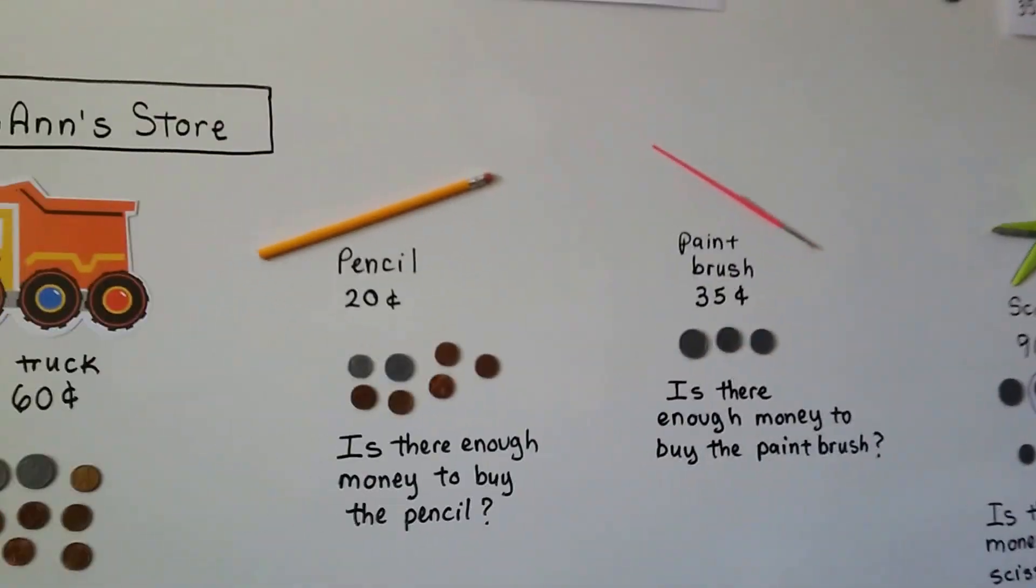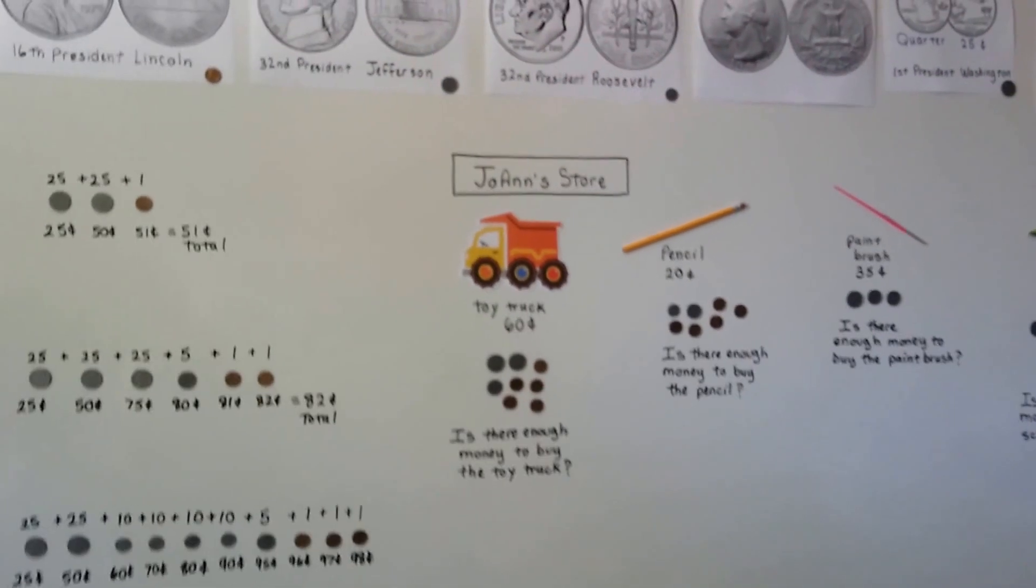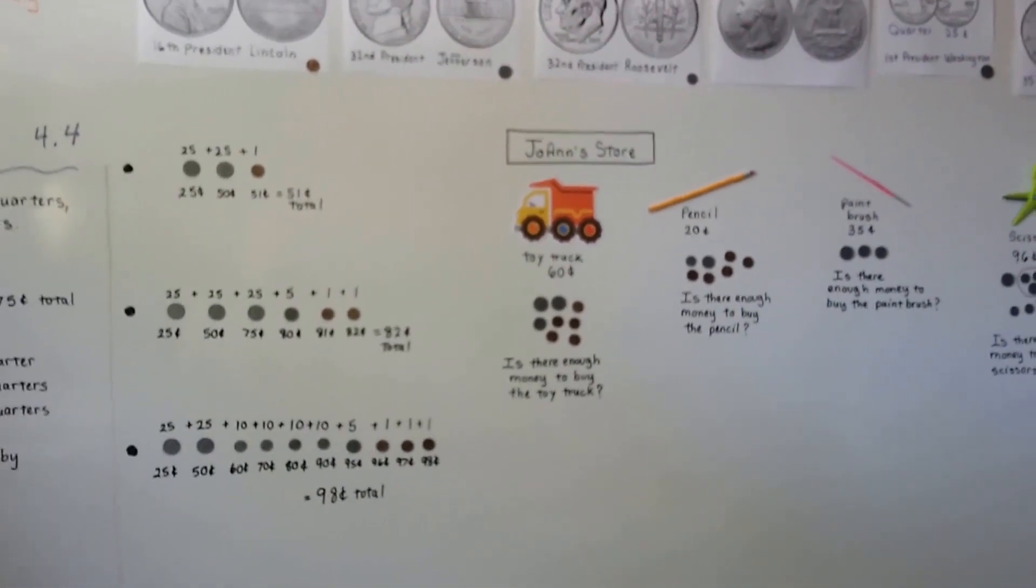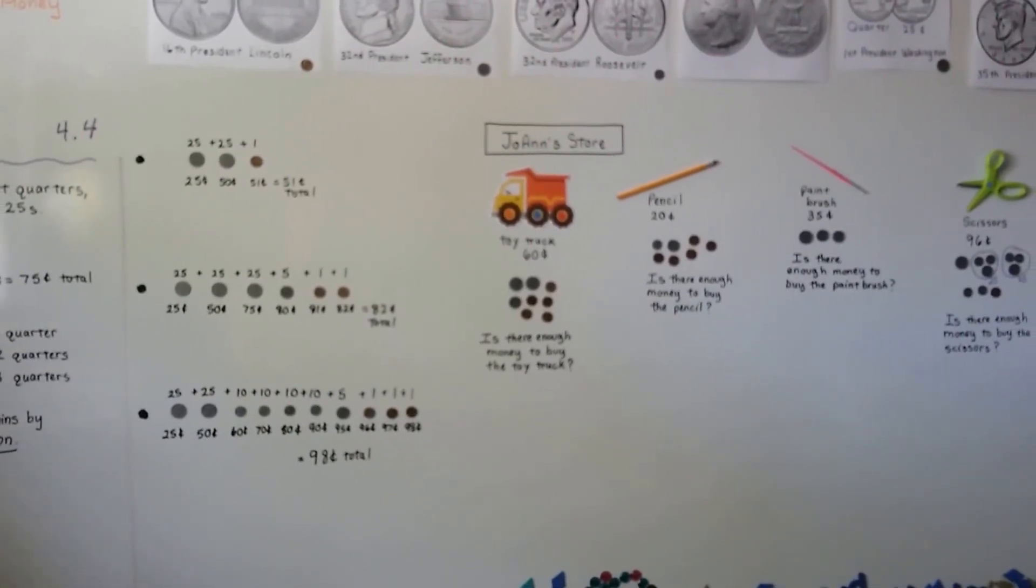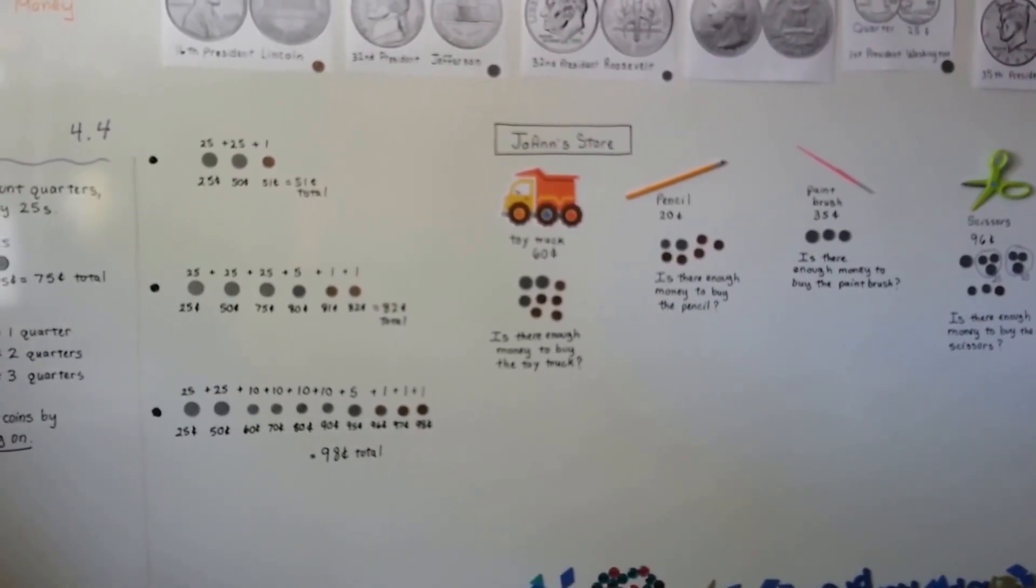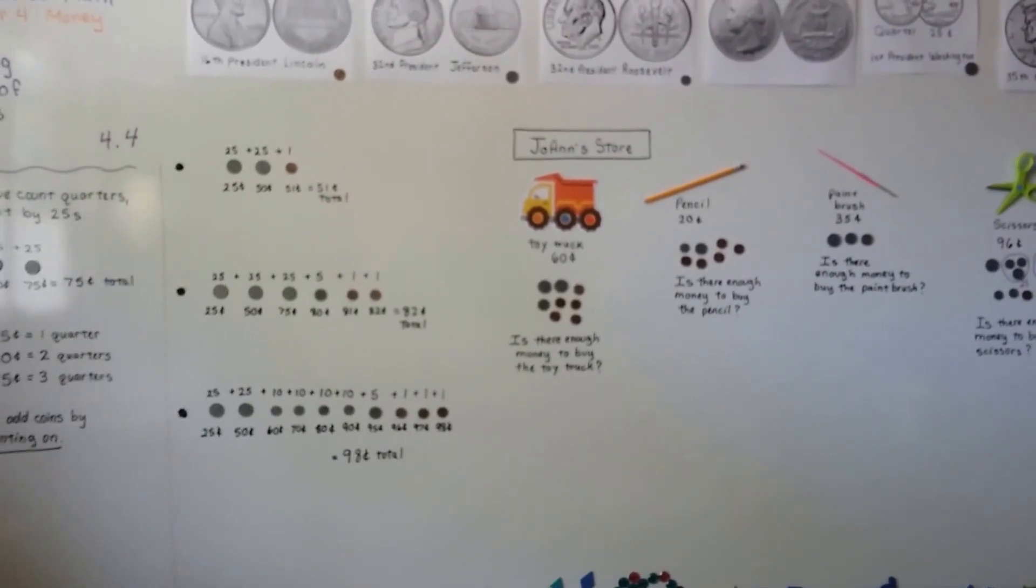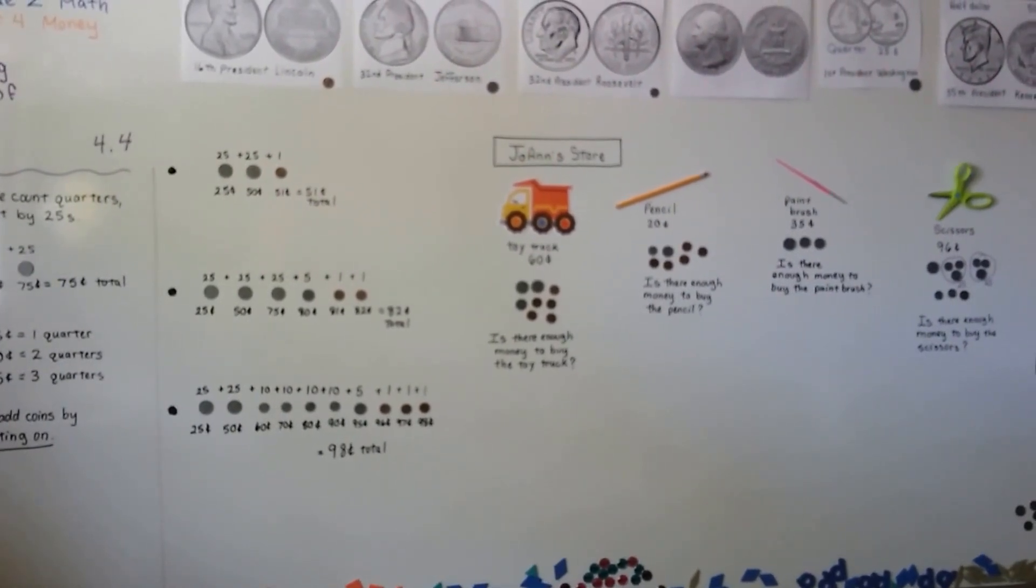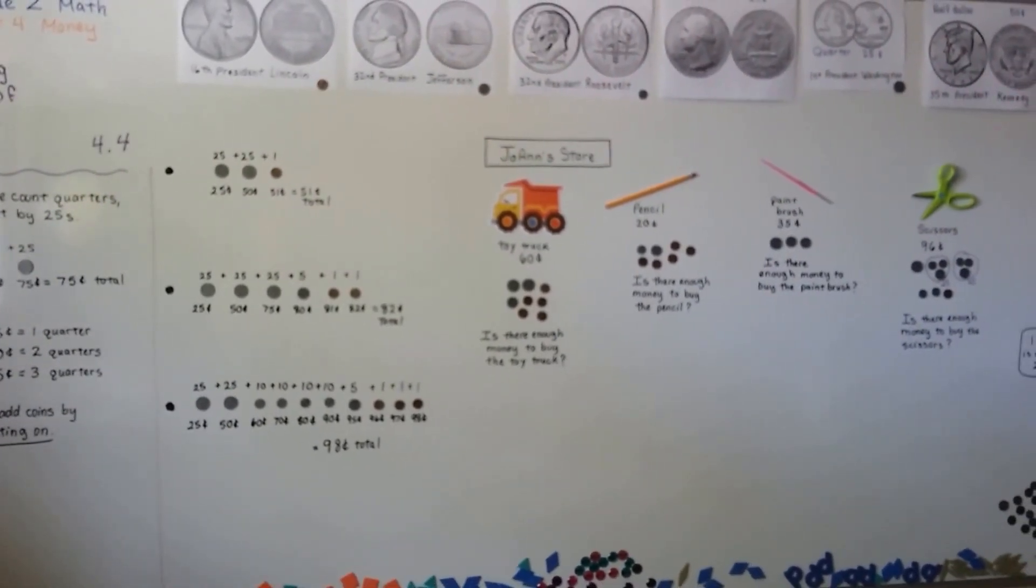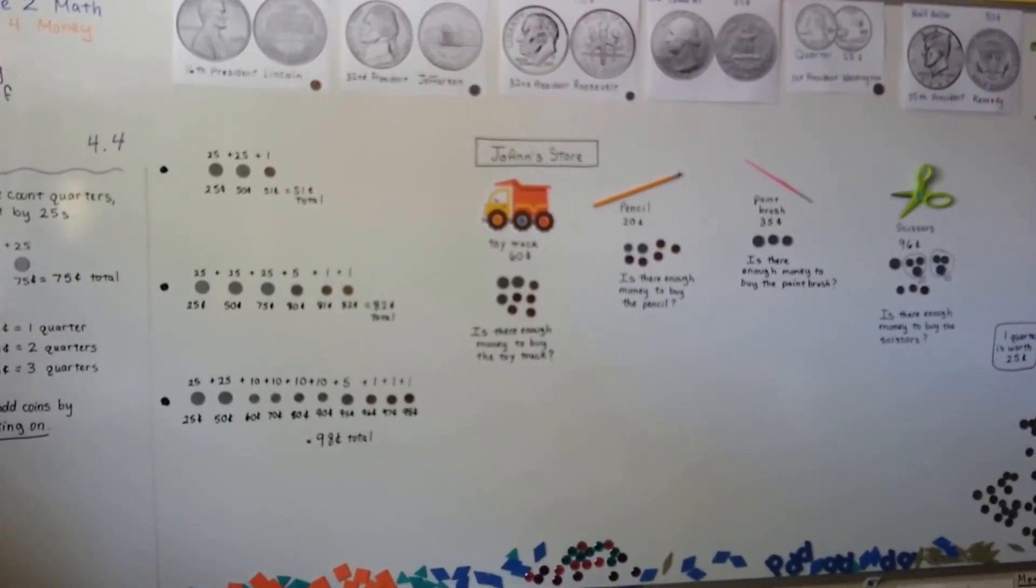So you can play store and you can find things around the house. And you can use some coins, some pennies, nickels, dimes, and quarters to play store with. And you can sell stuff to your mom or your dad or your brothers and sisters or your friend, or even your grandma or grandpa. It's kind of fun. And see if you've got enough money to buy things. I'll see you next video. Bye.